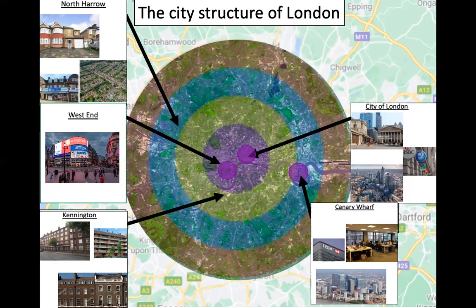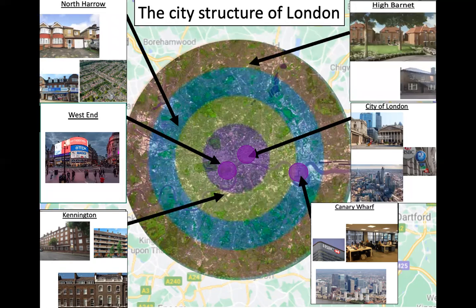Finally, the rural urban fringe. One example in London is High Barnet, where the houses are much larger, often detached, and they also have their own high streets. There's lots of green space and often the services and facilities are much better. Usually you'll find commuters living in these areas — they have the money to commute into the CBD for work and back out again so that they can live in an area with a high quality of life.